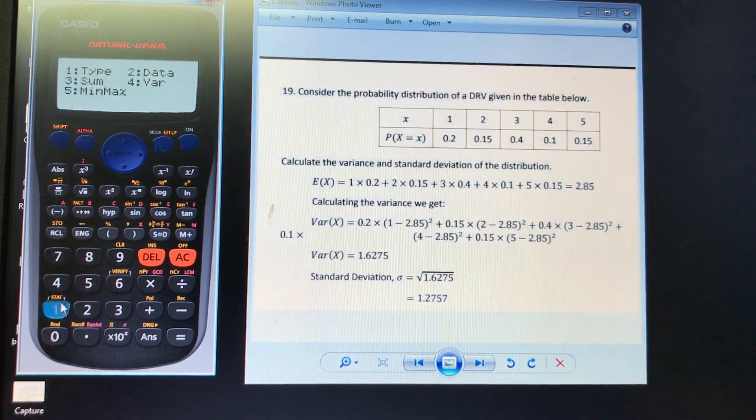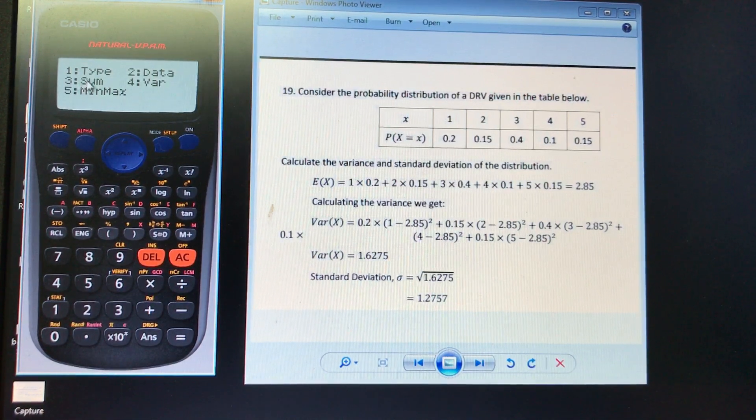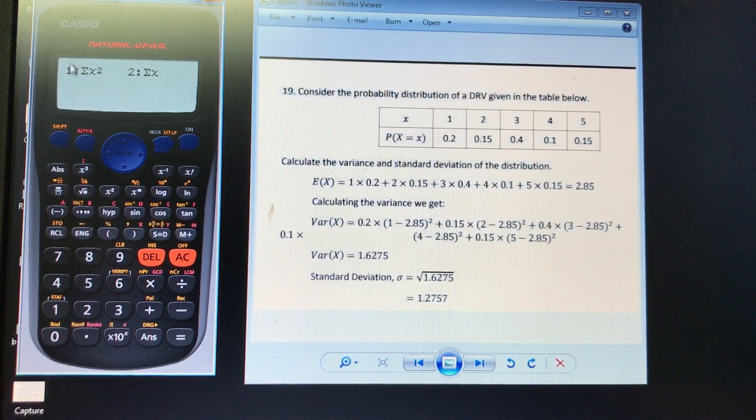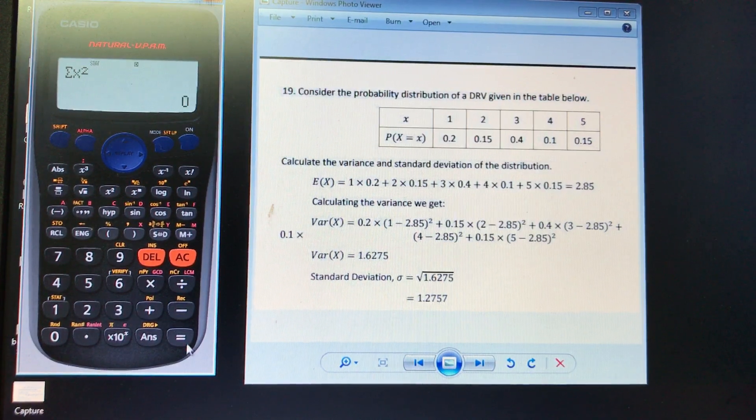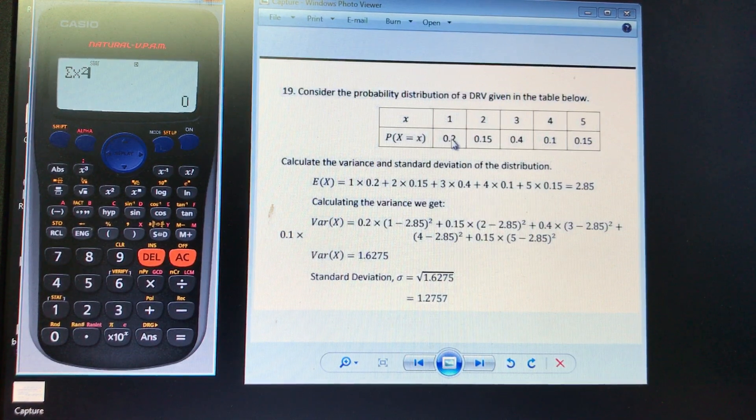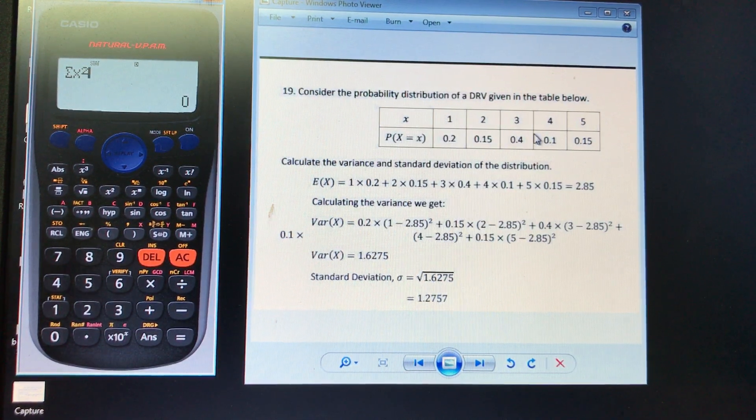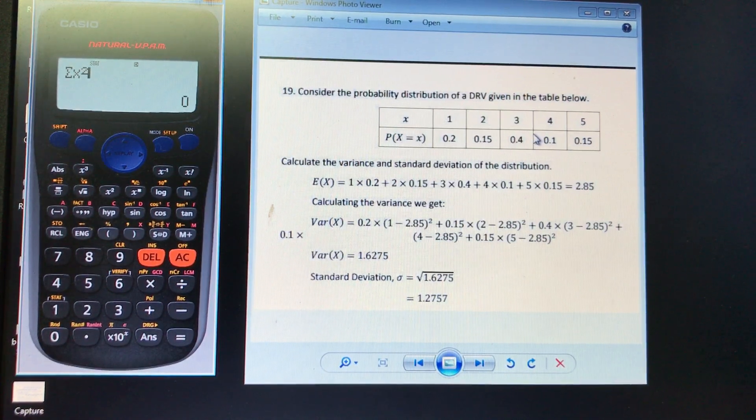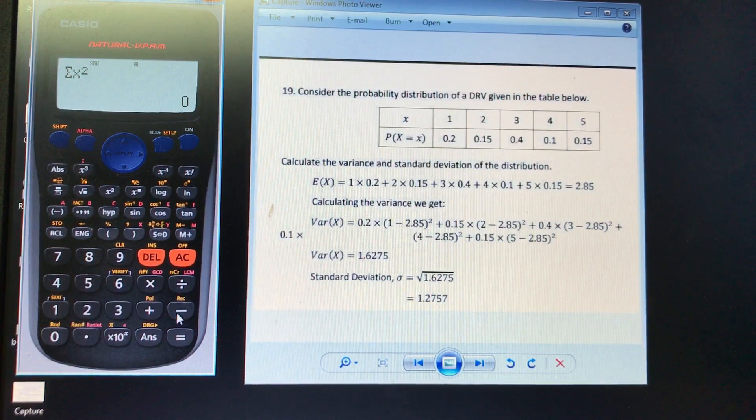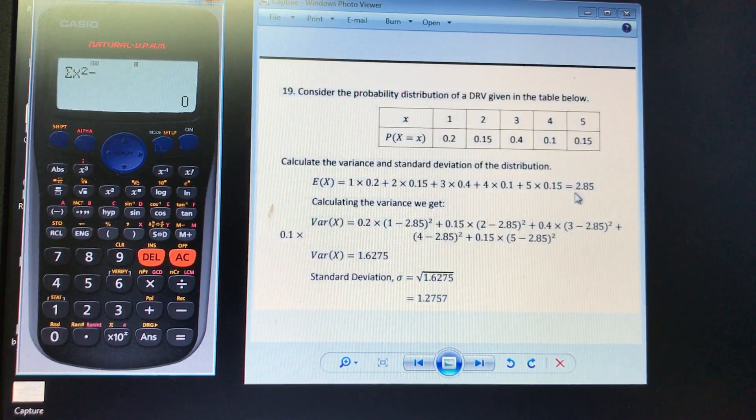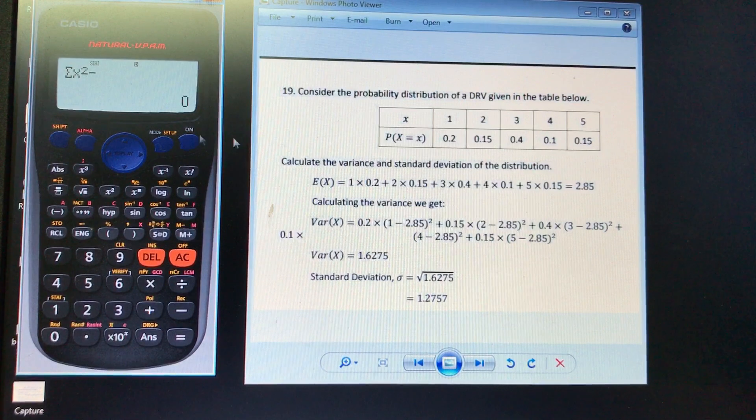So when we go to stat mode on our calculator, so shift 1, we're going to go into that sum and sum of x squared, this first option here, that is the value of 1 squared times 0.2 plus 2 squared times 0.15 plus 3 squared times 0.4. That option where it's the expected value is the score squared times the probability. And we've got to take away from it the expected value squared.